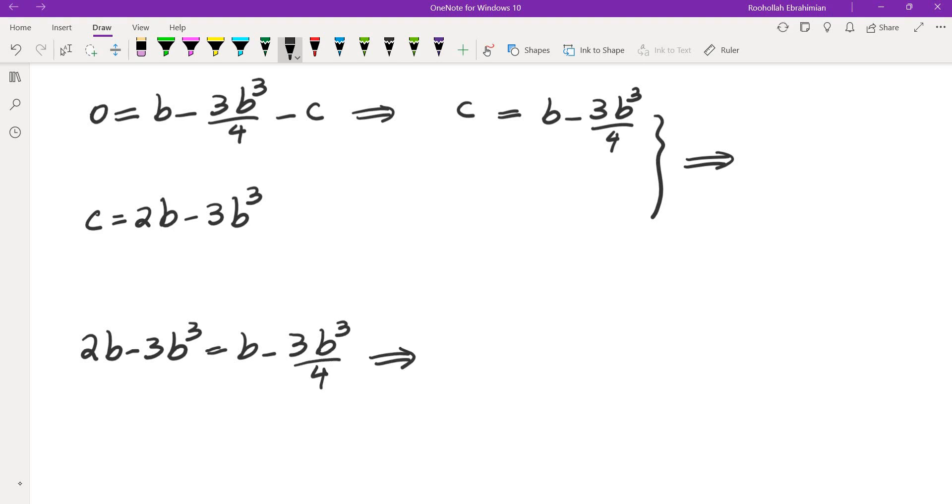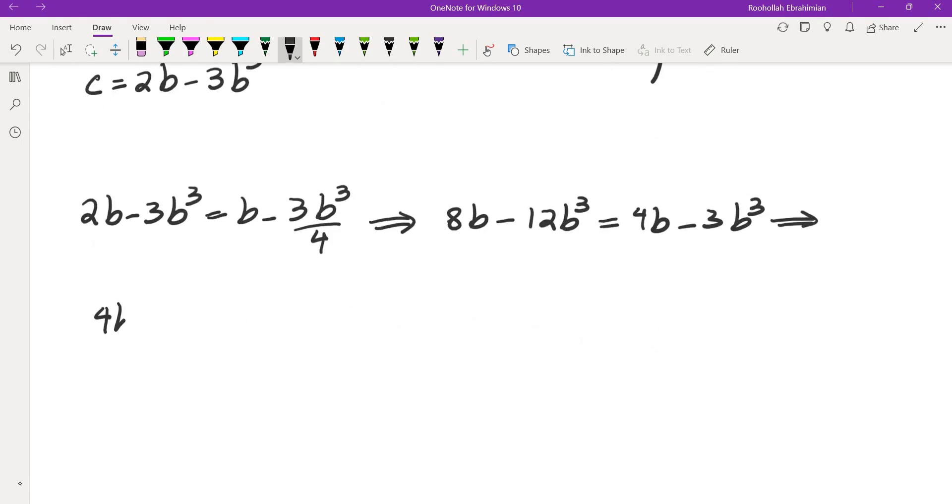We can set these two equal: 2b minus 3b cubed is equal to b minus 3b cubed over 4. So let's clear the denominators. We get 8b minus 12b cubed is equal to 4b minus 3b cubed.